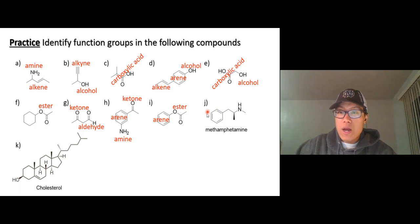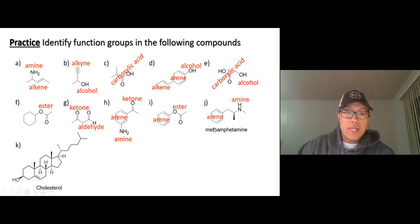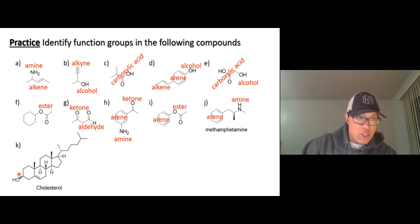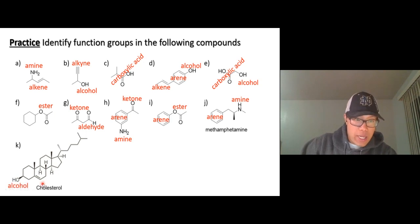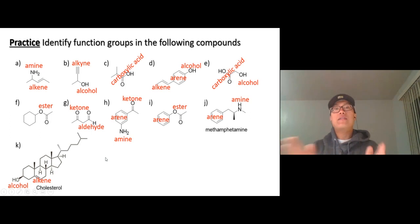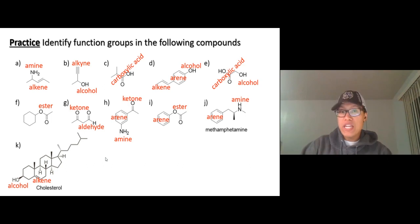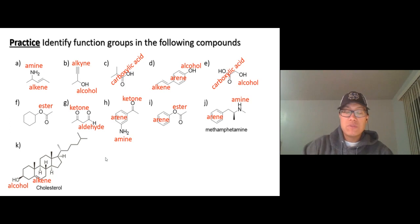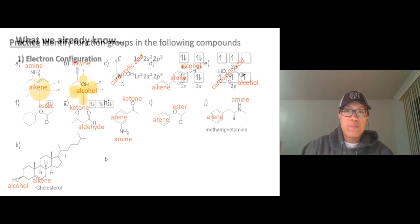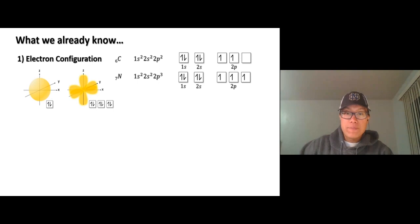In compound H, a ketone (C double bond O between two carbon chains), an arene, an alcohol, and NH2. In compound I, an arene, C double bond O and O — that's an ester. Methamphetamine: we have an arene and an amine group. Testosterone: we have an alcohol and an alkene double bond. Be familiar with these — it takes some time, but the more molecules and functional groups you see, the more you'll get the hang of it. Let's go to the next video.